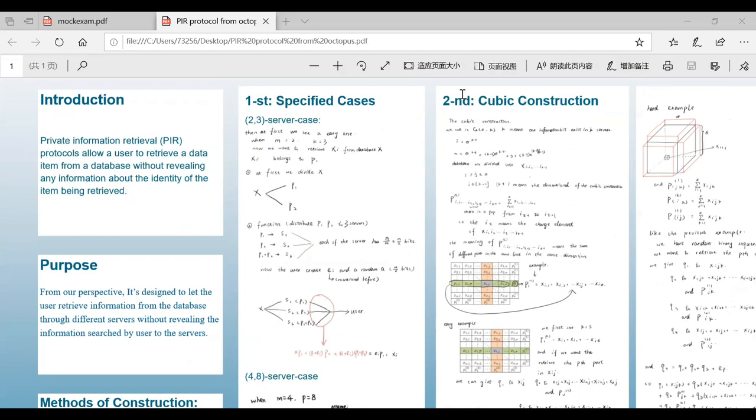Assume that we are going to retrieve the i-th byte from the database x, and x_i belongs to the part, part 1. We have uniformly divided x into 2 parts.